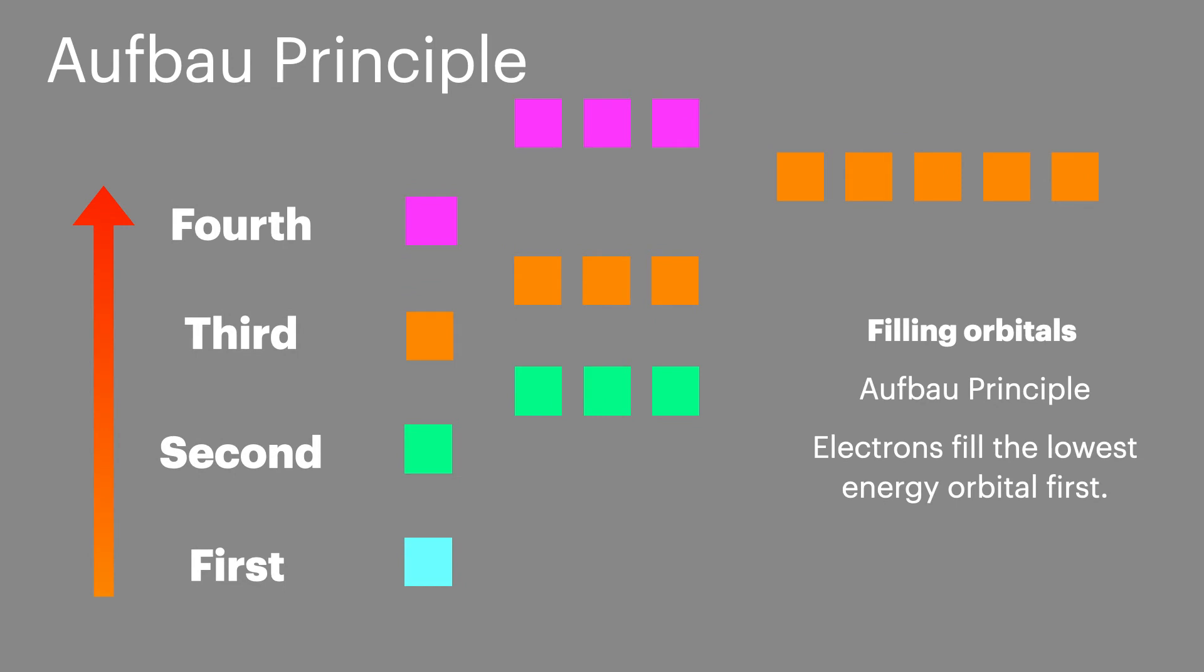When filling the orbitals, we follow the Aufbau principle, which means we fill from the lowest energy orbitals first. Before we fill the orbitals in this diagram, it's important to watch out for the 4S orbital. When filling up the orbitals, we always fill the 4S orbital before the 3D orbital. This is important to remember when working out electron configurations of an atom or when adding electrons to make a negative ion.